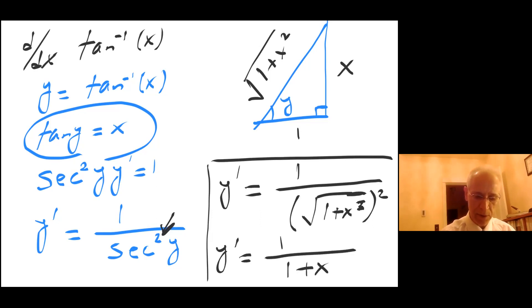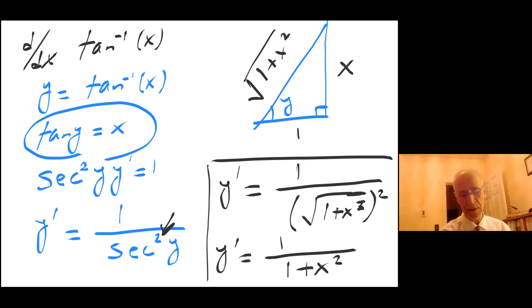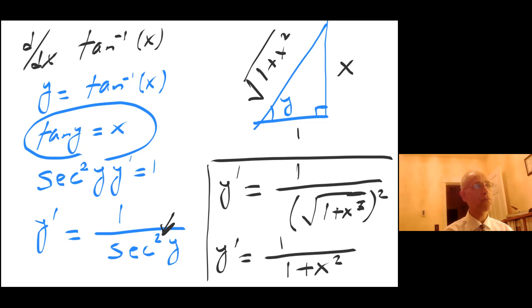In this case there is no restriction — there is nothing we can do to make the denominator zero. I will continue in a different video with the derivatives of secant inverse, cosecant inverse, and cotangent inverse. Thank you.